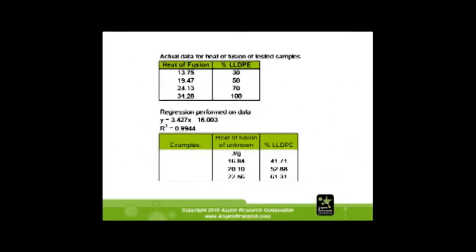You run second heats on these blends to have a known thermal history. You take the 100%, the 70-30, the 50-50, and the 30-70 blends as ordered pairs. Doing regression on this gives a line with an R² of 0.9944, which is quite good. So if you run an unknown sample and get 16.84 joules per gram, that equates to 41.71% linear low density. Similarly, around 19 joules per gram corresponds to approximately a 50% blend.